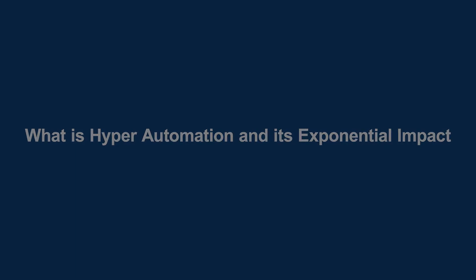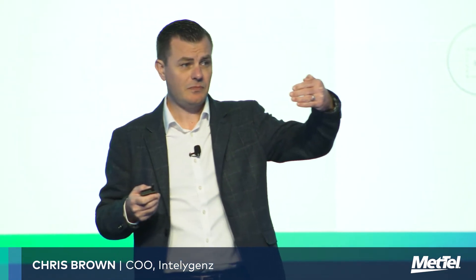What is hyper-automation? It's the combination of process automation through standard software, custom-built software, and tooling, plus the addition of artificial intelligence on top of that process to add cognitive capabilities and cognitive decision-making within that business process.